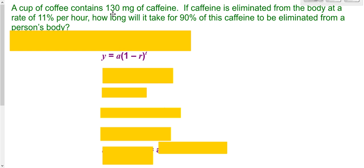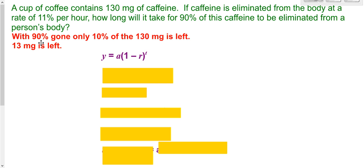We also need to look at A being your initial amount. Well, our initial amount was 130 mg of caffeine. Y is the amount that we would have left. We have 90% of the caffeine being gone. So first of all, we need to figure out 90% gone. That means 10% is left, because Y represents your amount left. So 10% of that 130 means there's 13 mg left.